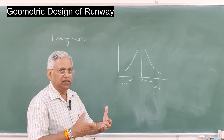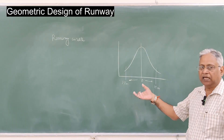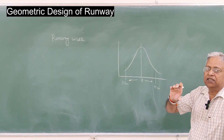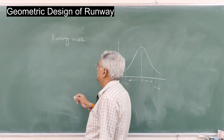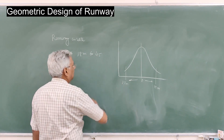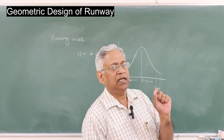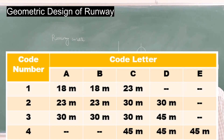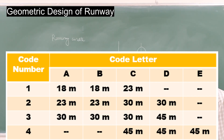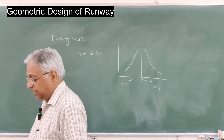Assuming that some allowance is required of 7.5 meters on either side, 45 meters is considered the maximum width required for operation of an aircraft on the runway. Therefore, ICAO has suggested a runway width of 18 meters to 45 meters depending upon the class of the airport. As I told you in my last session, ICAO has classified airports based on a two-letter code — 1 to 4 and A to E. This table gives runway widths suggested by ICAO for different classes of aerodromes, varying from 18 meters for 1A and 1B class to 45 meters for class 3D, 3E, 4C, 4D, and 4E.